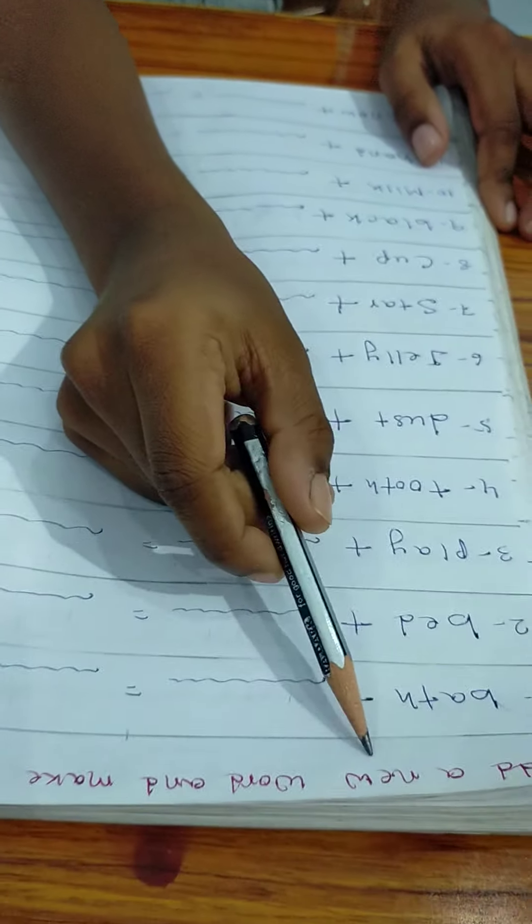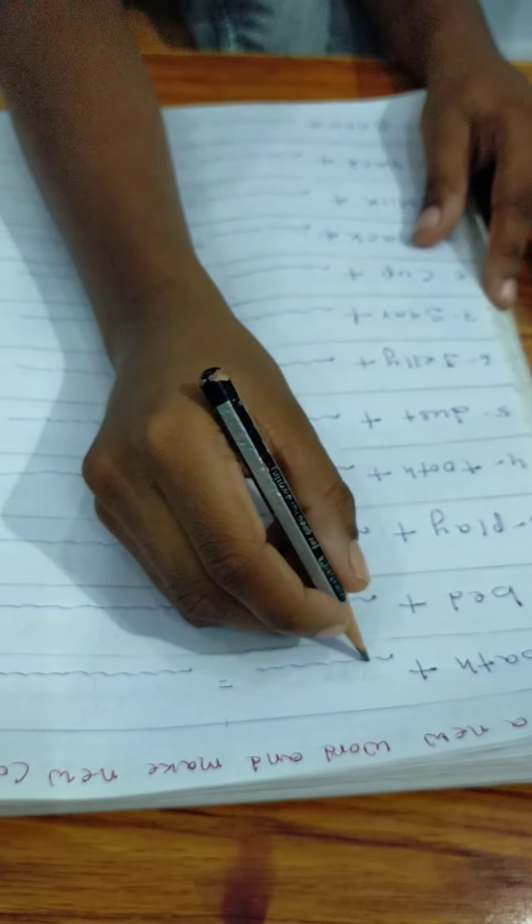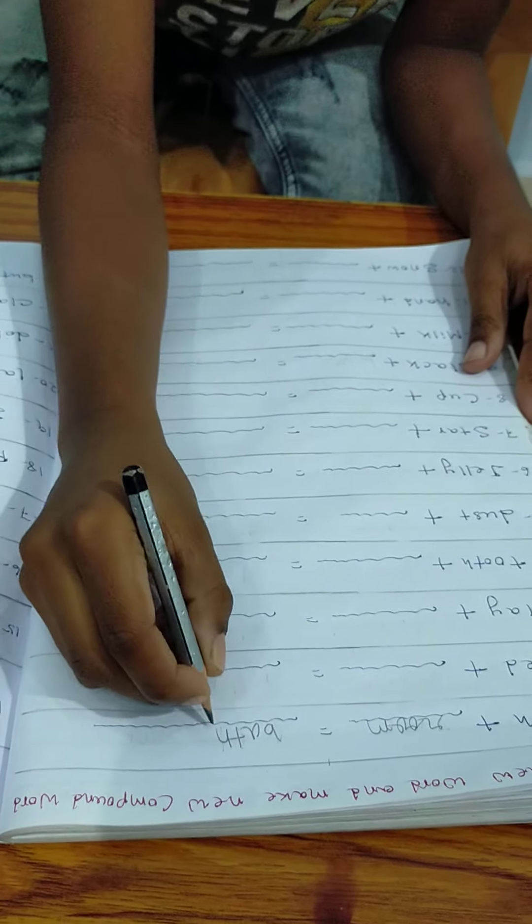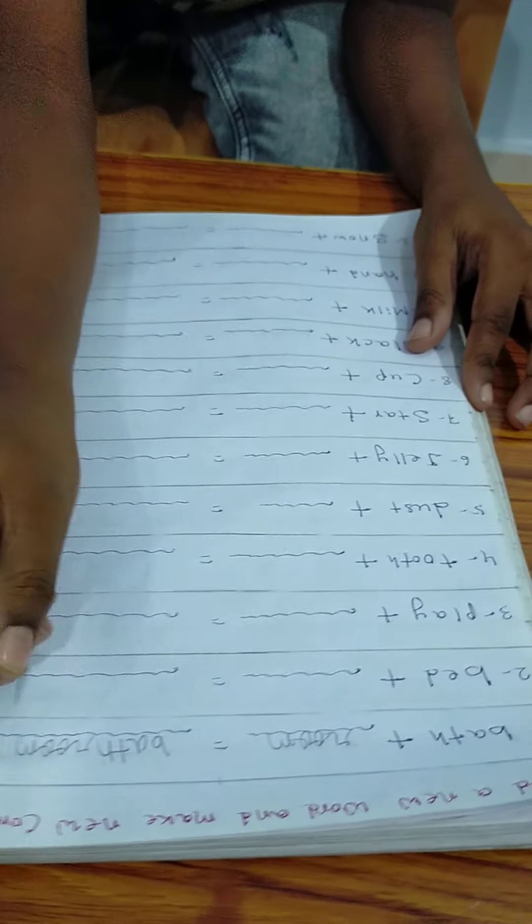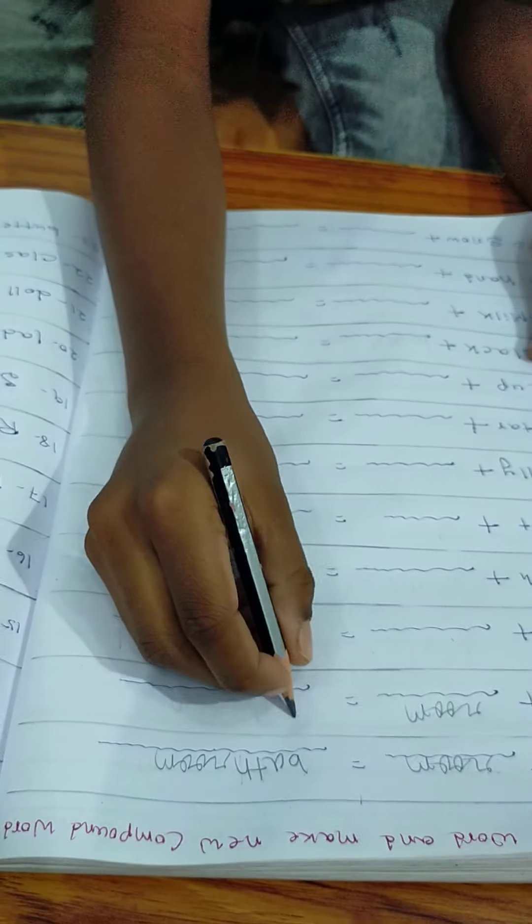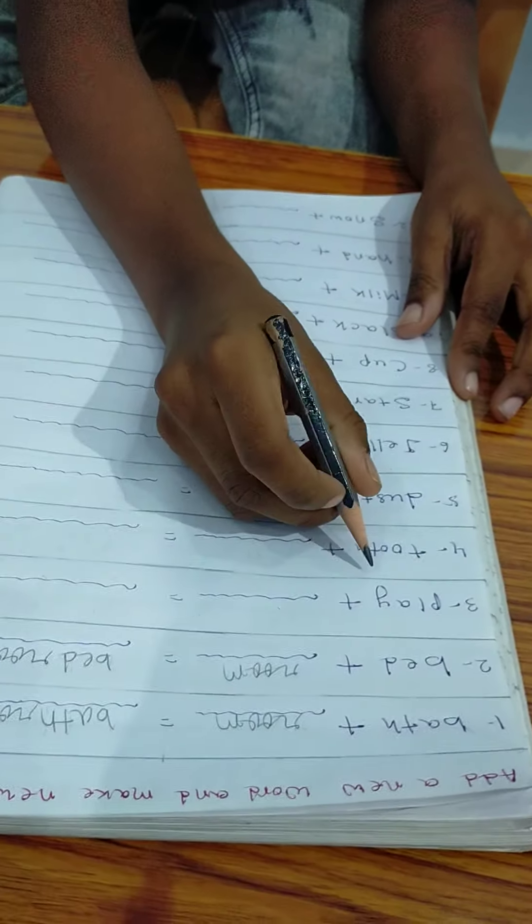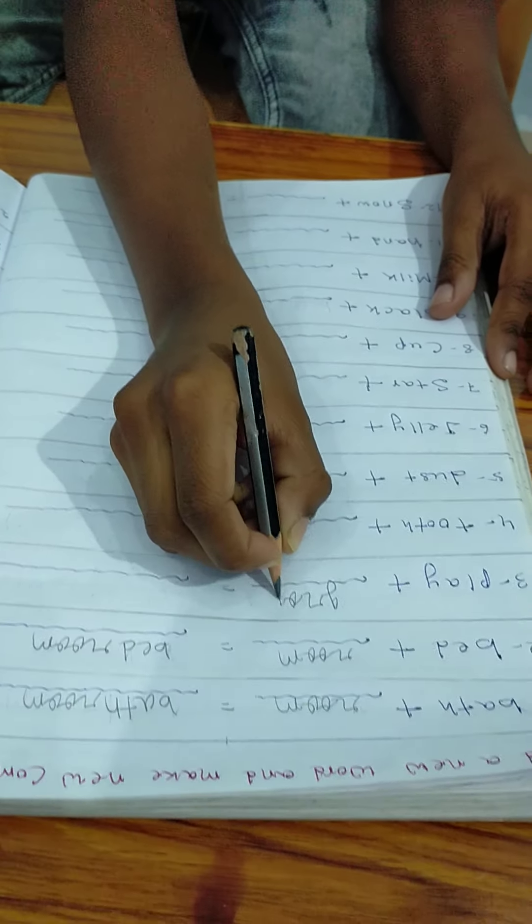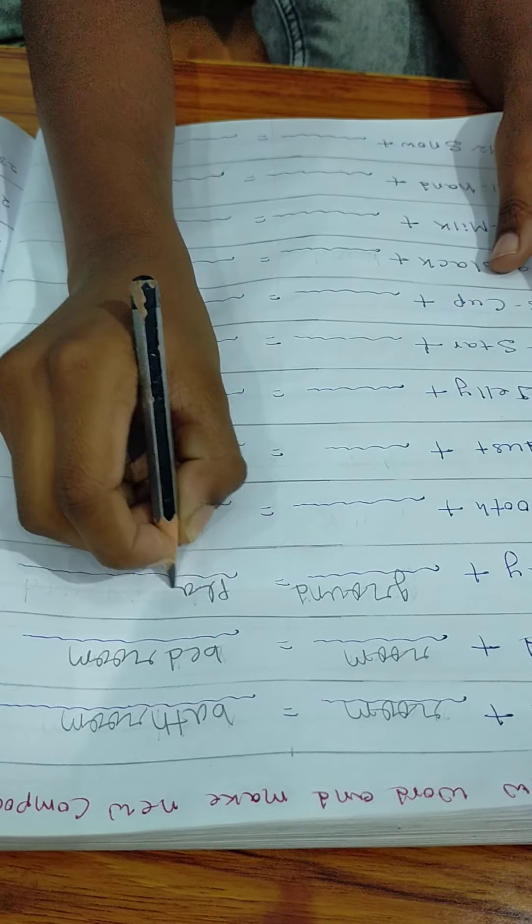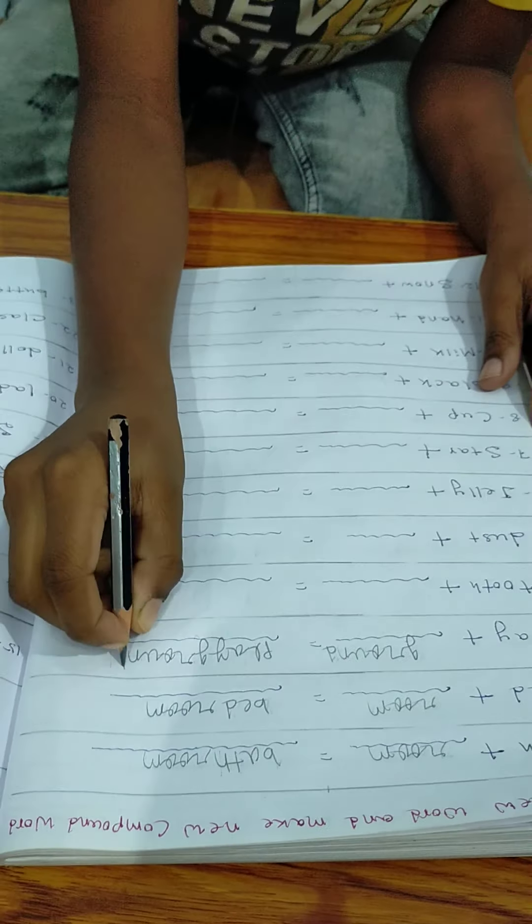It is a new word and make new compound words. Bathroom. B-A-T-H, bath. R-O-O-M, room. Bathroom. Playground. P-L-A-Y, play. G-R-O-U-N-D, ground. Playground.